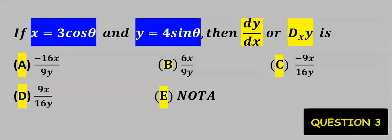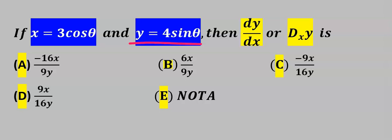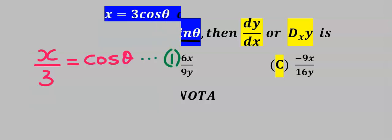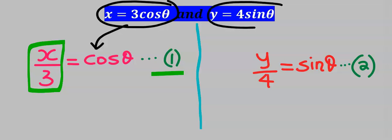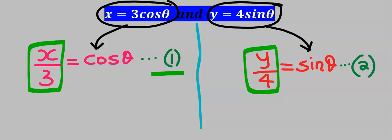Consider the parametric function: x = 3cos(θ) and y = 4sin(θ). The options do not have a function of sin(θ) or cos(θ), so before we start to differentiate, let's make cos(θ) the subject from the first function and sin(θ) the subject from the second function. We get cos(θ) = x/3 (equation 1) and sin(θ) = y/4 (equation 2).